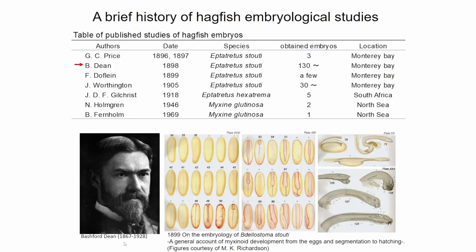Is that true? To observe neural crest cells we need to find embryos. But historically, only one person — Bashford Dean, an American — had studied hagfish embryos. He was a collector of medieval armor, and he also published a nice paper on ancestral early vertebrate species. His report on the embryology of Bdellostoma stouti used more than 100 embryos and carefully described the developmental process, from Monterey Bay specimens.